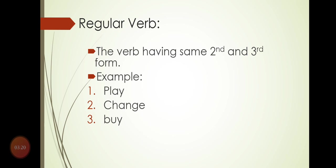Regular verbs are verbs having the same second and third form. For example: 'play' — the second and third form is 'played' (P-L-A-Y-E-D), and the third form has the same spelling. 'Change' — the second and third form is 'changed,' we add '-d' at the end. So verbs where the second and third forms are the same are called regular verbs.